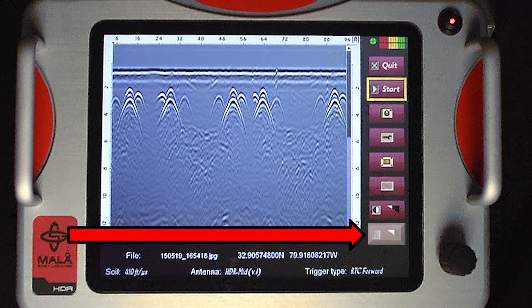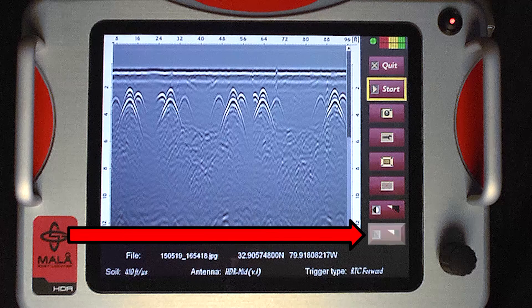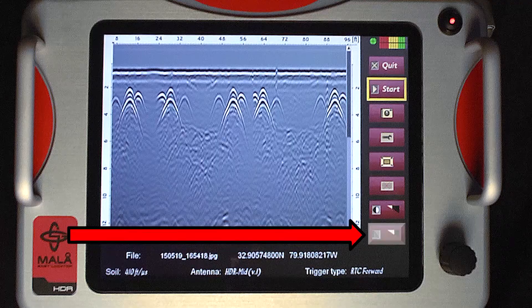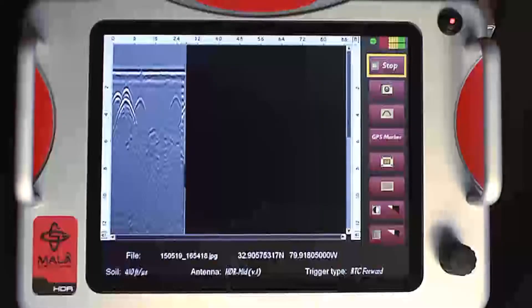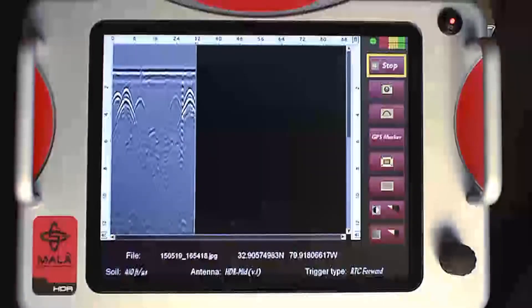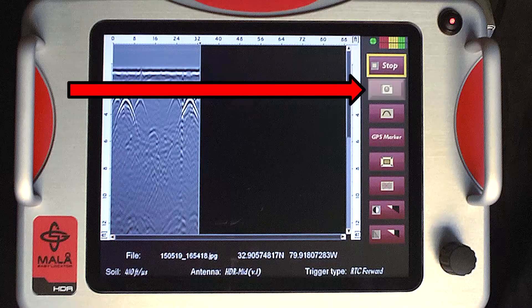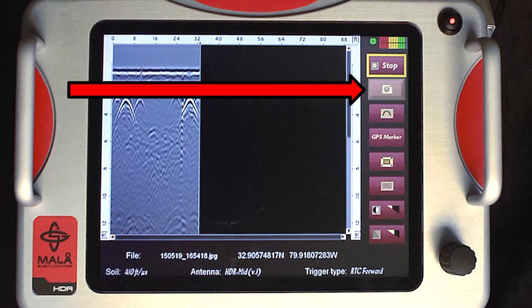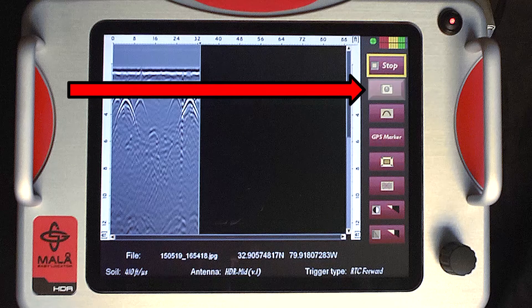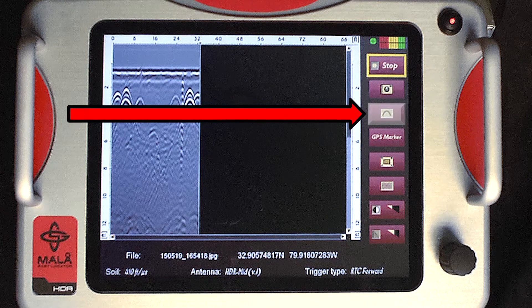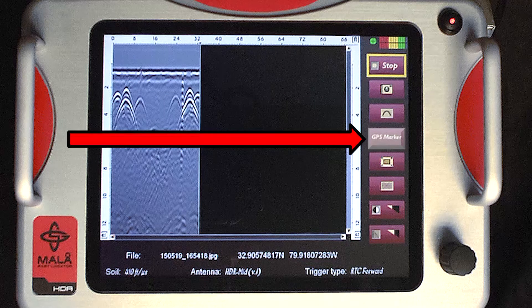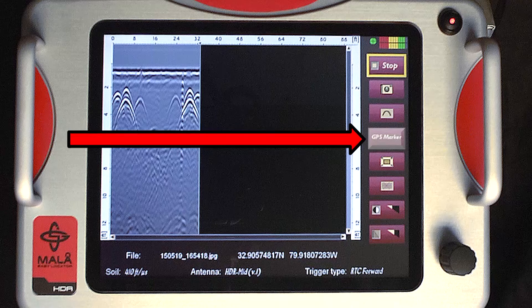These icons include: Stop, Camera icon if screenshot option is purchased, Hyperbola fitting tool, and GPS marker if GPS marker option is purchased.